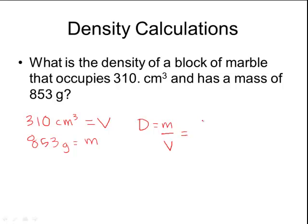So instead of m, I'm going to put 853. And instead of volume, I'm going to put 310. And then if you take and plug into your calculator, 853 divided by 310, you should get 2.75 grams per centimeter cubed.